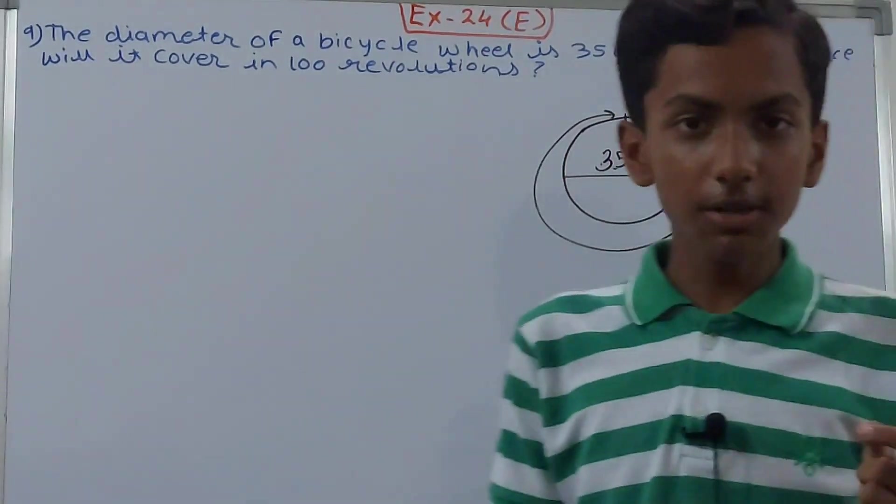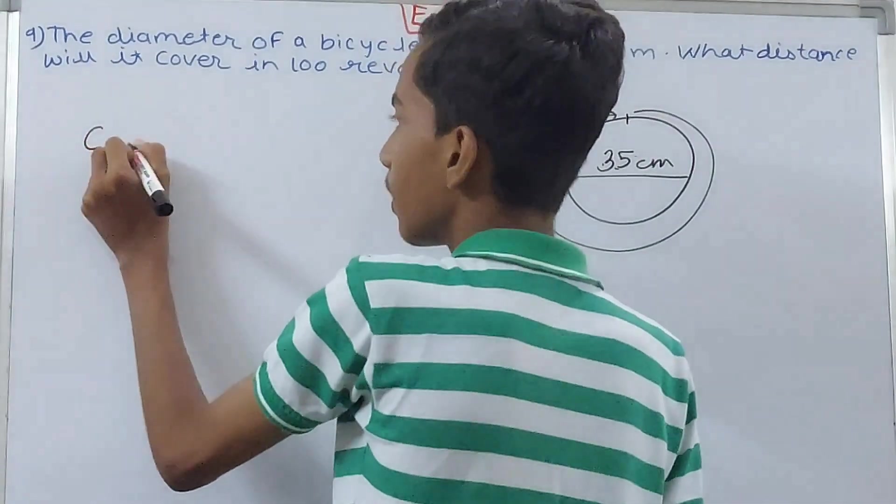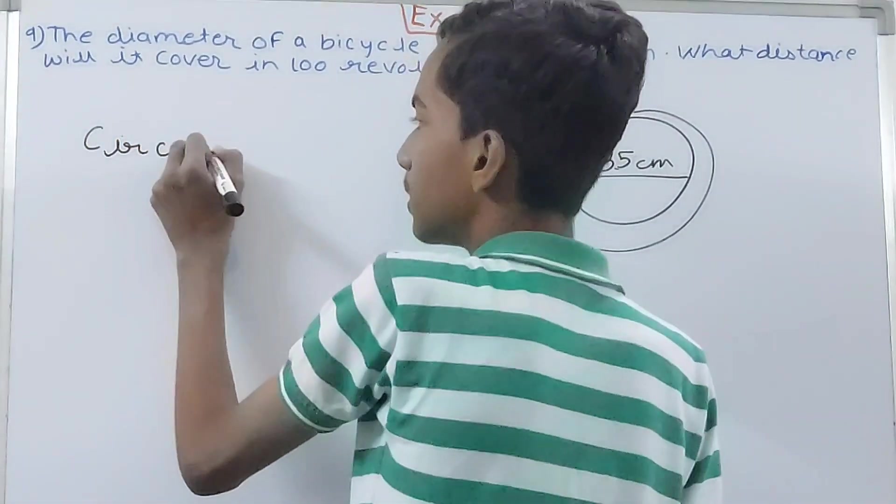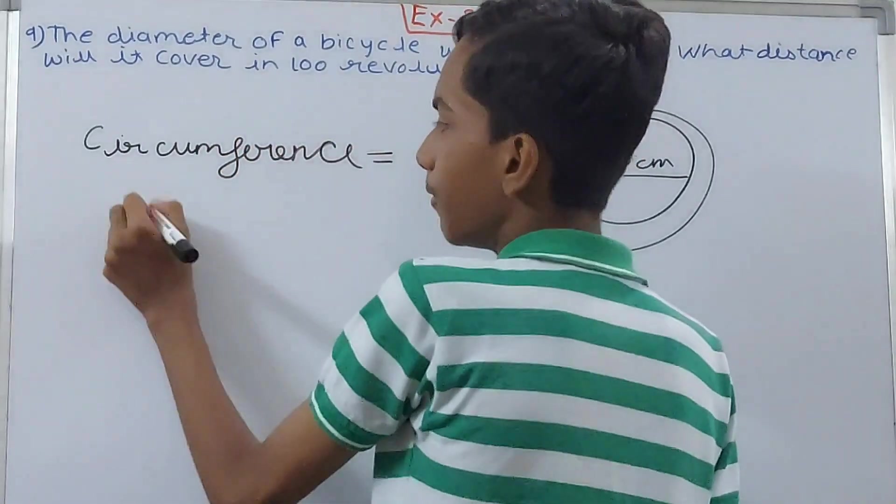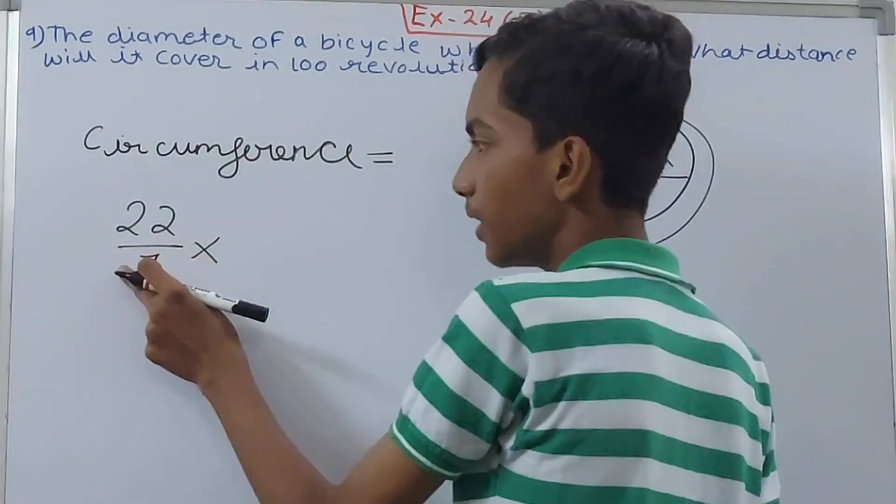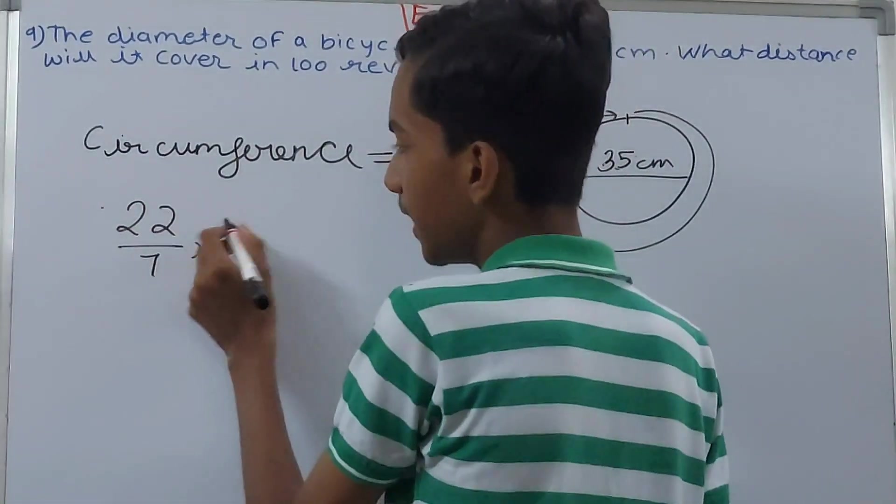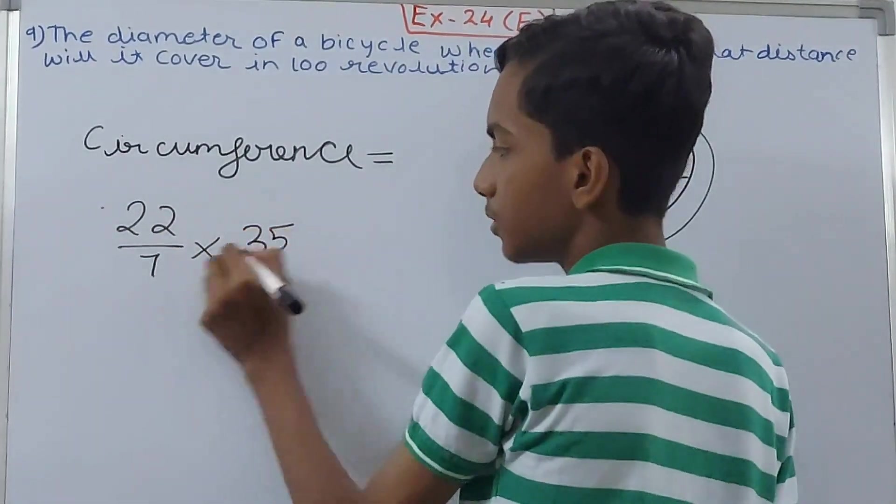Circumference equals 22/7 times diameter, so 22/7 × 35. 7 and 35 is 5, so 5 × 22 = 110 centimeters.